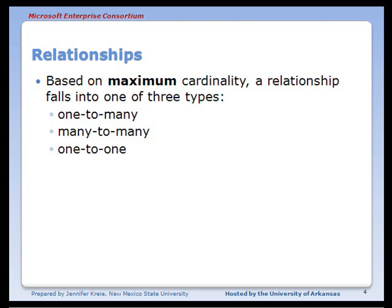Based on the maximum cardinality, a relationship is classified as one of three types: one-to-many, many-to-many, or one-to-one.